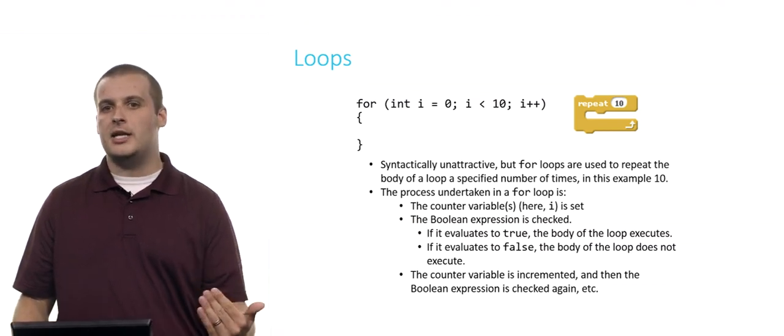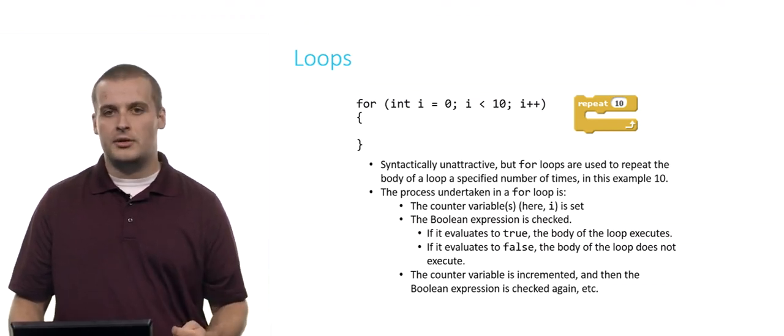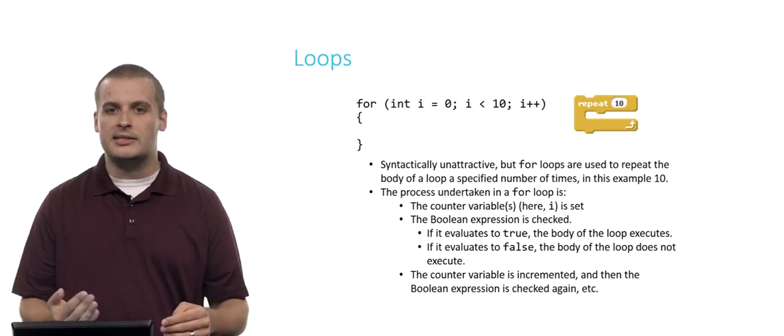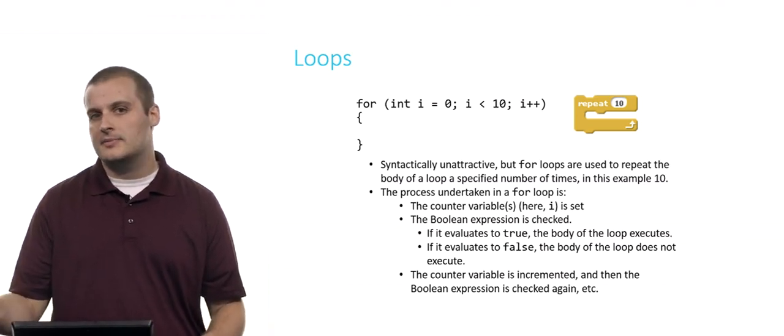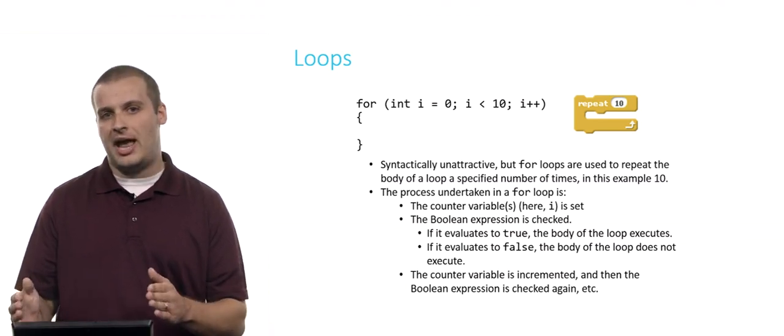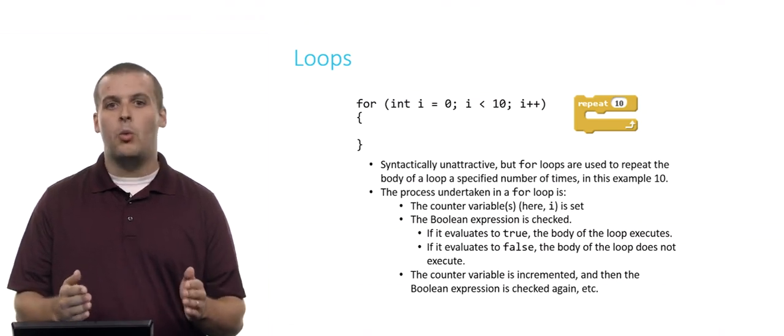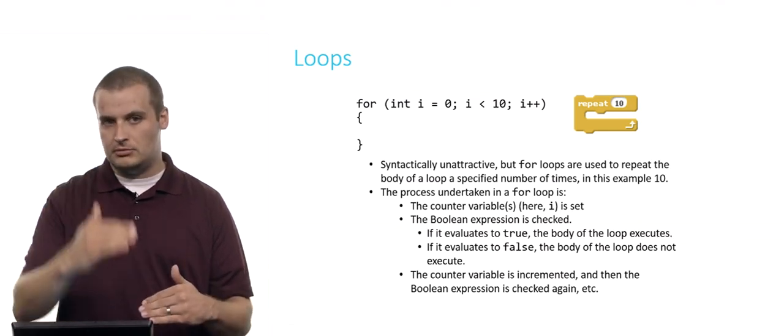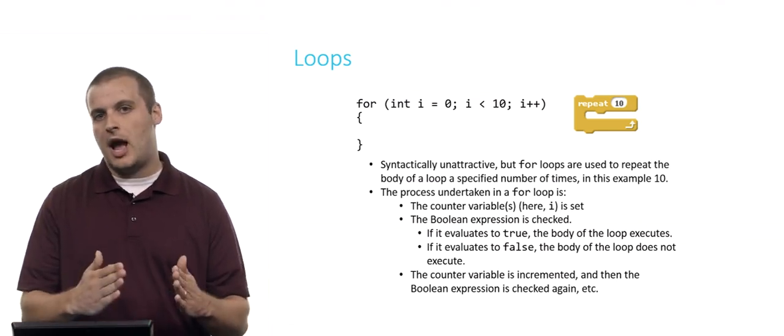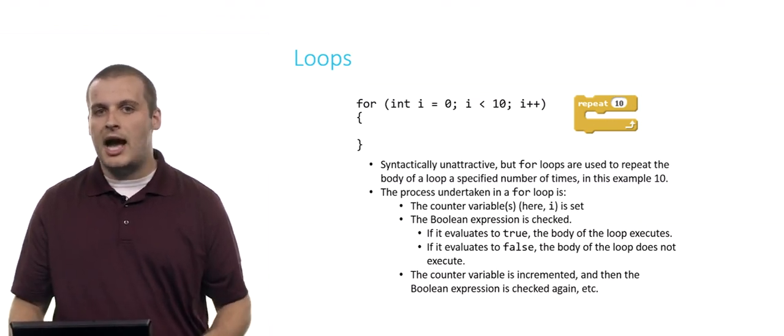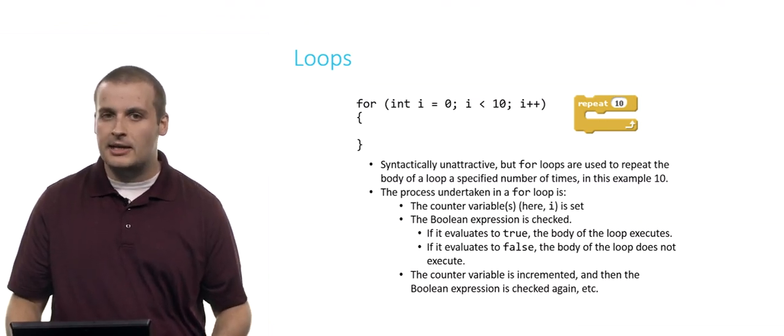So we start out by saying int i equals zero. Then we check whether or not the Boolean expression is true. Zero is less than 10, so it's true. So we're going to proceed into the body of the loop. Things will happen inside the loop, and when we encounter that closing curly brace, the next thing we do is we say i plus plus. So i was zero, now i is one. Then we again check the value of the Boolean expression in the middle. One is less than 10. So we'll go through this process again and again. We'll get to the closing curly brace again. We'll increment i from one to two, then from two to three, and so on and so on until eventually i's value becomes 10. Is 10 less than 10? No.